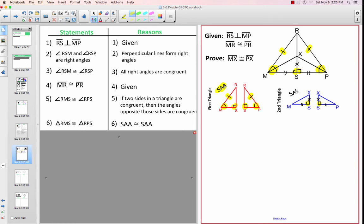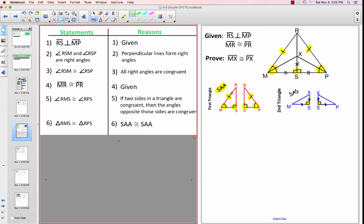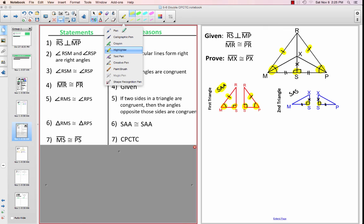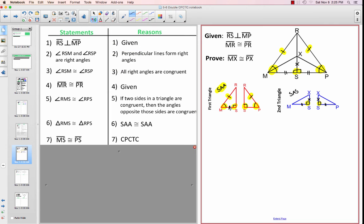So triangle RMS is congruent to triangle RPS by the side angle angle method. And the reason why we said we were going to do that in the plan was so that we would be able to get all of the additional parts of those triangles to be congruent as well. And the part that we really needed was MS, so I'll even mark it off in here as well. We wanted this to be congruent to this. The reason why we specifically picked those parts were because they were in the smaller triangles that contained what we wanted to prove here. So we can go ahead and say MS is congruent to PS because of CPCTC.